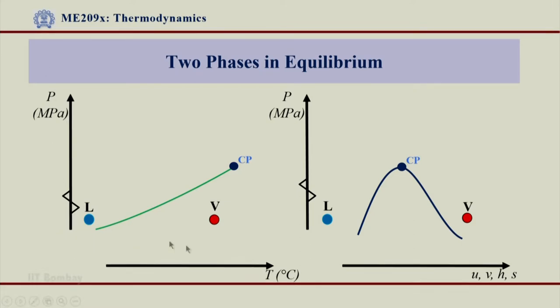Here on a PT diagram I have shown the first point from where we started, 20 degrees centigrade, and the point V. Again, on this P-any property I have taken here on x-axis, which could be U, V, H, and S: thermal energy, specific volume, enthalpy, or entropy. I can take any of these properties.